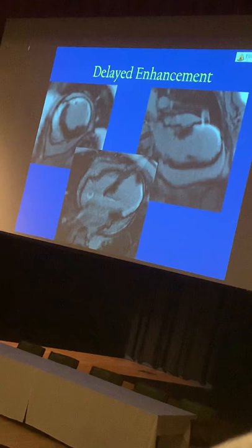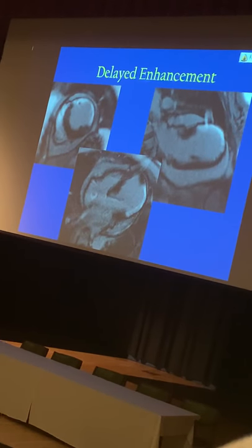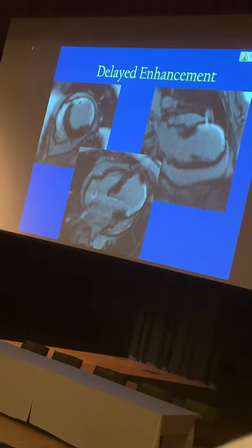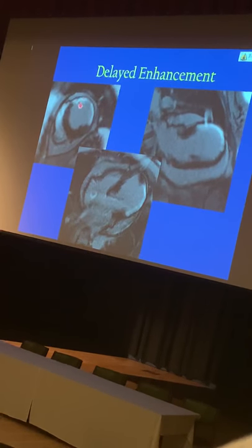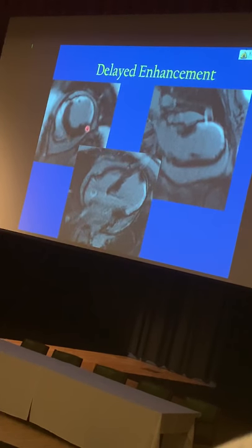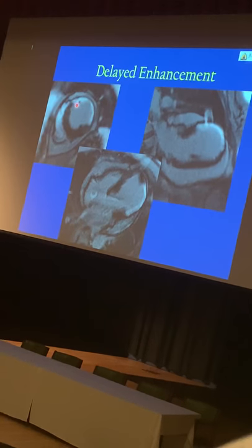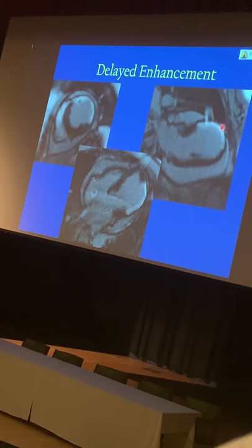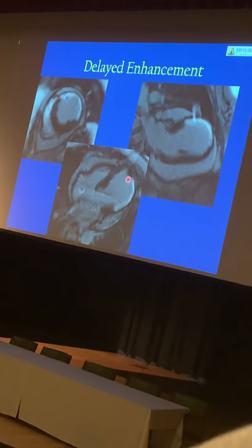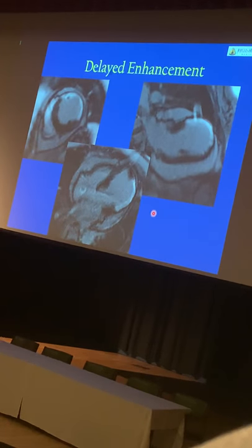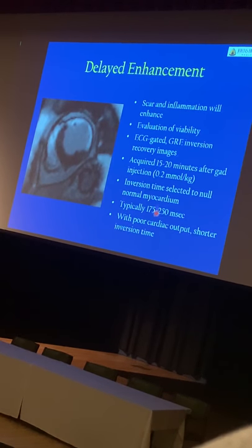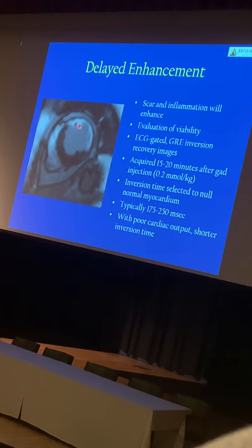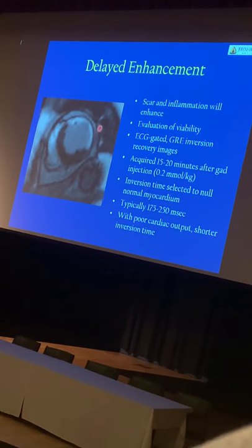Another key sequence in any cardiac MRI is the delayed enhancement, or late gadolinium enhancement. In this example, you can see that the normal myocardium is black, but the myocardium in the anterior and lateral wall is thinned out and abnormally bright. You can confirm this finding on the VLA and also on the four-chamber view. This is due to a previous myocardial infarction in the LAD and circumflex territory, resulting in thinning and scar development of the myocardium.